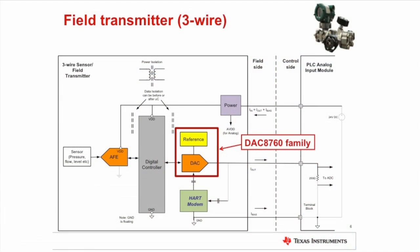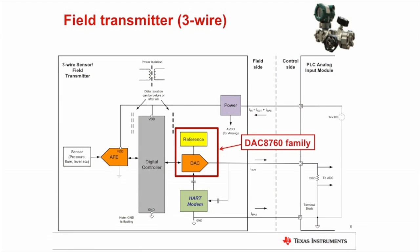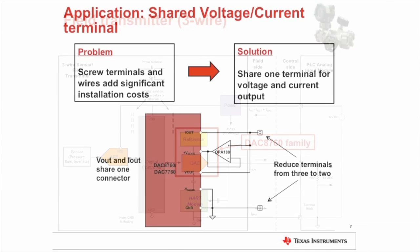Texas Instruments is releasing a new family, the DAC8760 family, which is the focus of this presentation. It integrates the digital-to-analog converter along with the amplifier. Now let's take a look at the field transmitter. There is a sense element on the left which is converted to an electrical signal and eventually becomes the current loop shown in this block diagram. The DAC8760 family is a good fit for these applications as long as there is a local power supply or power provided through a three-wire interface connection.